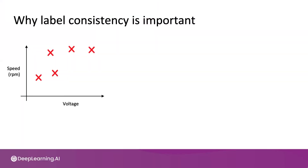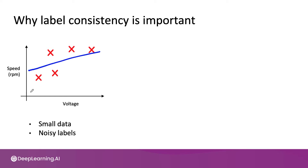Let's say you have a dataset that looks like this, where you have five examples — a pretty small dataset. Because the output Y is pretty noisy, it's difficult to know what function you should use to map voltage to the rotor speed in RPM. Maybe it should be a straight line, or go up and then be flat, or maybe a curve. Really hard to tell. When you have a small dataset of five examples and noisy labels, it's difficult to fit a function confidently.